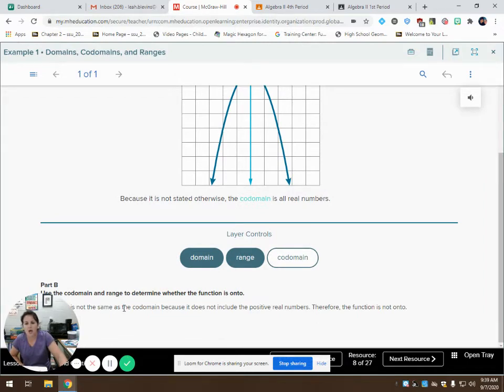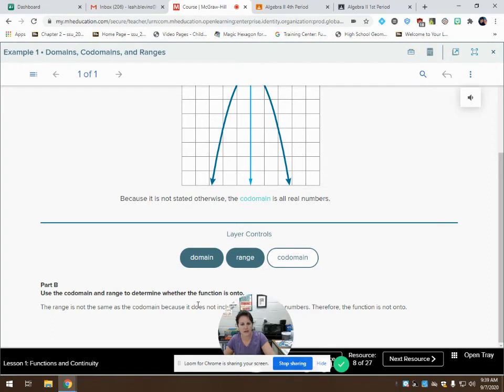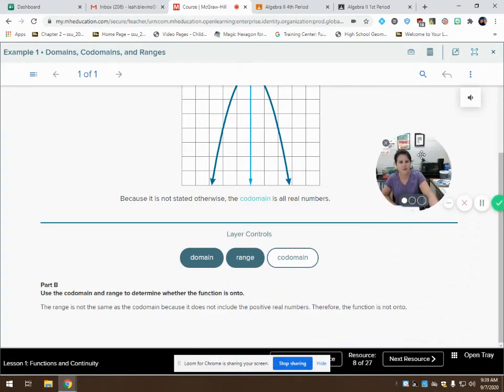So we're going to use the codomain and the range to determine whether the function is onto. I'm going to use this over here if I can. There we go. Okay. So it says the range is not the same as the codomain. Therefore, the function is not onto. I want you to think about that for a minute.